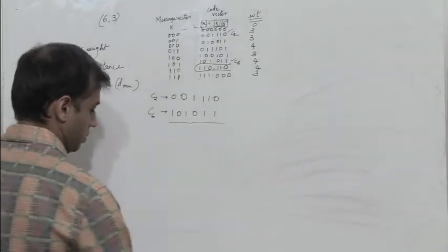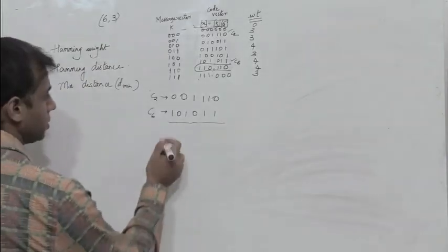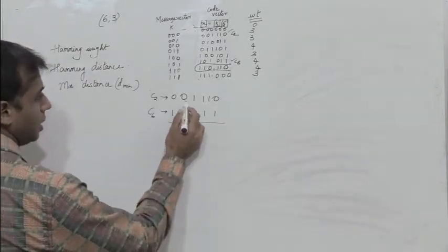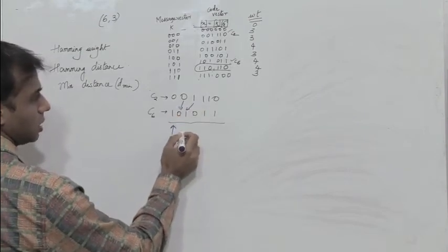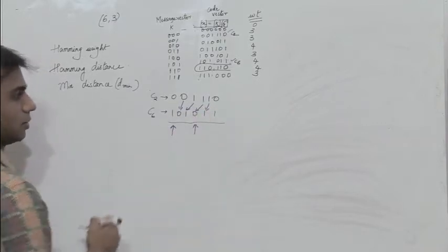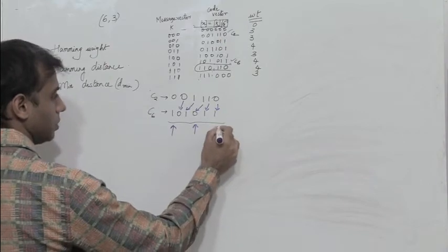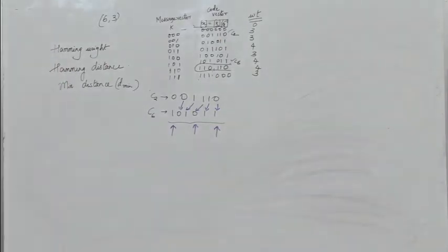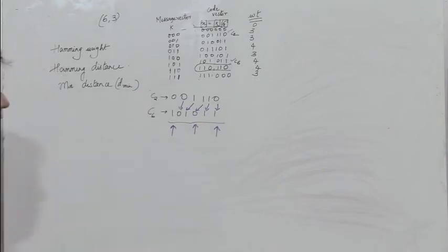When we observe the bits of C2 and C6, they differ in the first bit, do not differ in the second bit, not the third bit, they do differ in the fourth bit, do not differ in the fifth bit, and do differ in the sixth bit. So the code vectors C2 and C6 differ in three bit positions, therefore the hamming distance is 3.